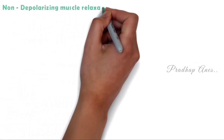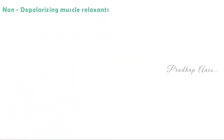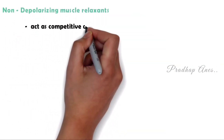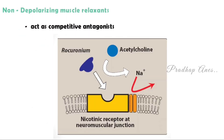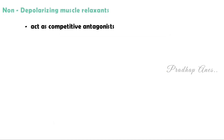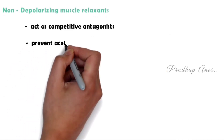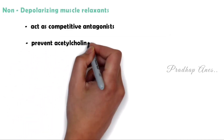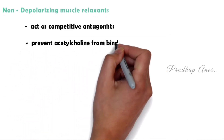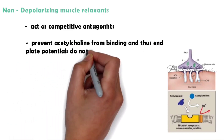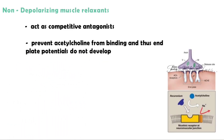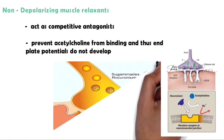Among them, non-depolarizing muscle relaxants are commonly used. Non-depolarizing muscle relaxants act as competitive antagonists. They bind to the acetylcholine receptors but do not induce ion channel openings. So they prevent acetylcholine from binding, and thus end plate potentials do not develop. This is how muscle relaxants act.